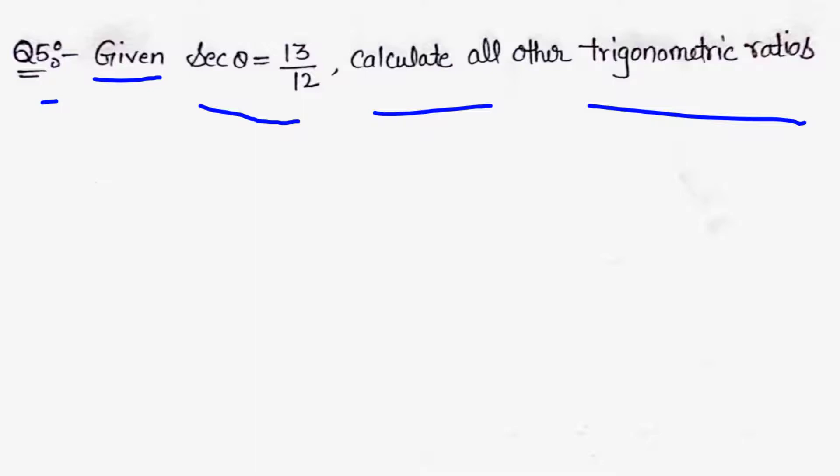Given sec θ = 13/12, calculate all other trigonometric ratios. We need to find sin θ, cos θ, tan θ, cot θ, and cosec θ.